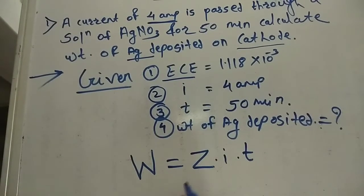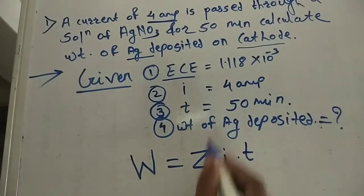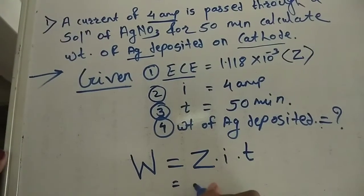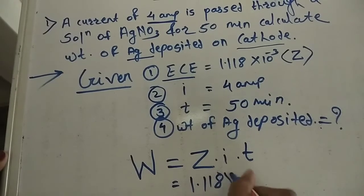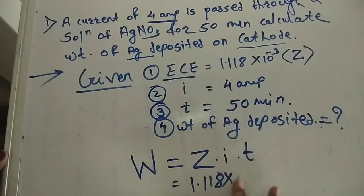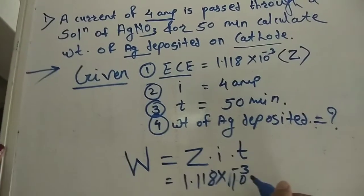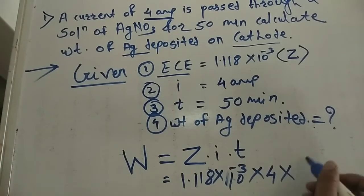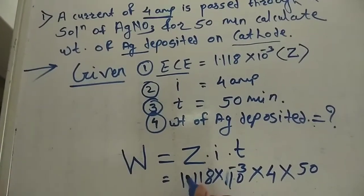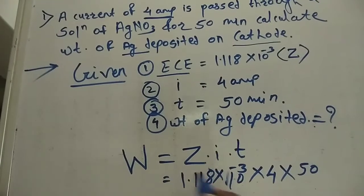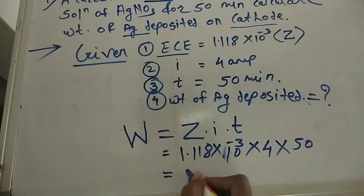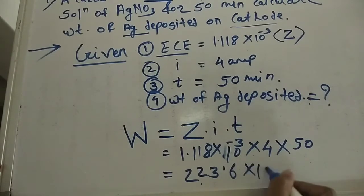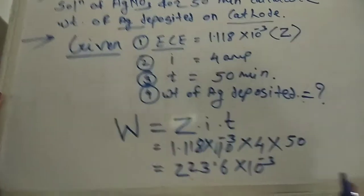In this problem, the electrochemical equivalence Z is 1.118 × 10⁻³, the current I is 4 ampere, and the time T is 50 minutes. After substituting these values, we get 223.6 × 10⁻³.